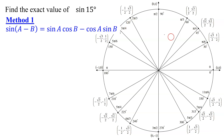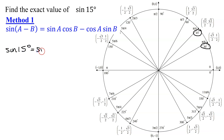So are there two angles on the unit circle, when I subtract them, I get 15 degrees? Yes, I've got lots of choices. I could use 45 minus 30 — that's 15 degrees. I could use 60 minus 45. But I'm going to take the simplest one in quadrant one, so I want to say that the sine of 15 degrees equals the sine of 45 degrees minus 30 degrees.